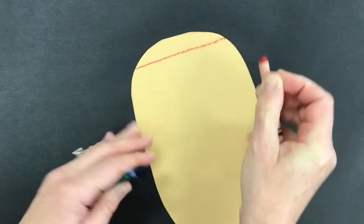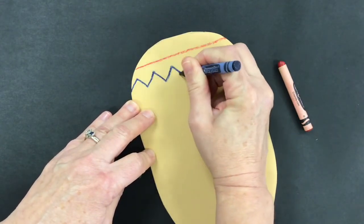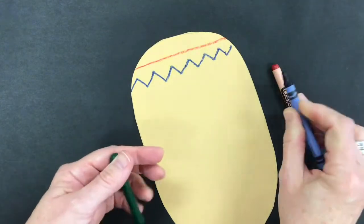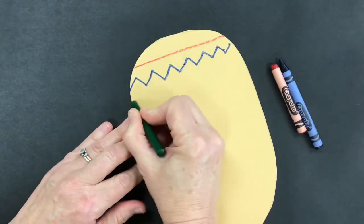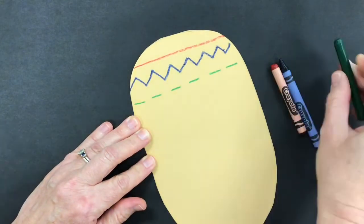So first I'm making a red straight line. Now I'm making a blue zigzag line. Next I'll make a green dashed line, or sometimes we call it a broken line.